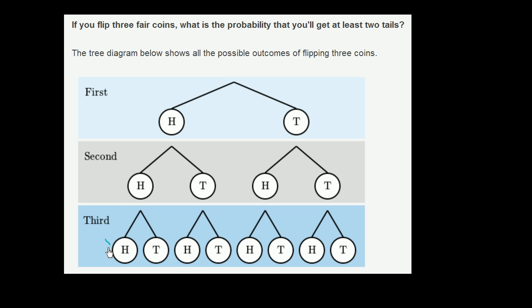So this node right over here is getting heads on the third coin, heads on the second coin—we just follow up the tree—and heads on the first coin. So this is getting three heads, which definitely doesn't meet our constraint. This node right over here, we have head, head—this is often called a leaf if we're talking about a tree diagram—head, head, and a tail. So that's one tail. That doesn't meet our constraint of at least two tails.